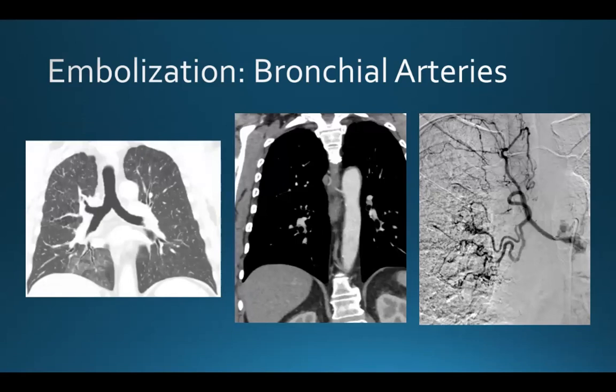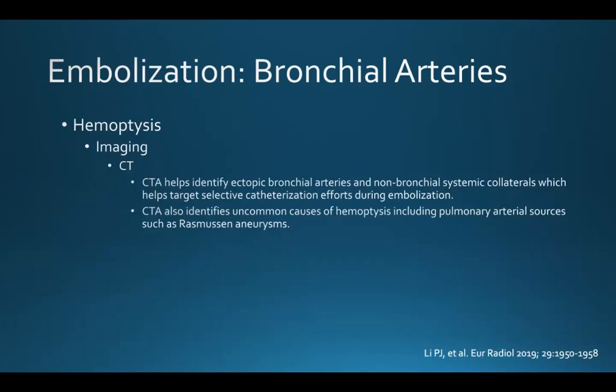Here's an example of how CT can be helpful. On the left is a coronal image showing ground glass opacification in the right middle lobe. On the coronal image from the angiographic phase, you can see a prominent bronchial artery arising at the level of the tracheal bifurcation, and this correlates well to what we saw on a bronchial artery angiogram in the midst of an embolization procedure. CTA can also be helpful in identifying ectopic bronchial arteries and non-bronchial systemic collaterals, which helps target selective catheterization efforts during embolization.